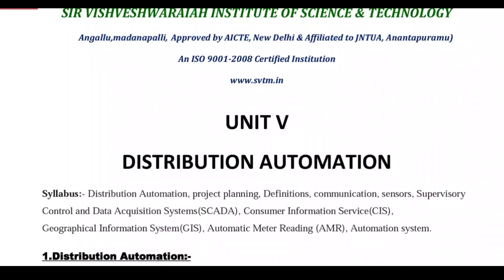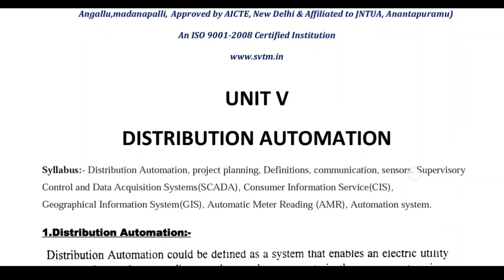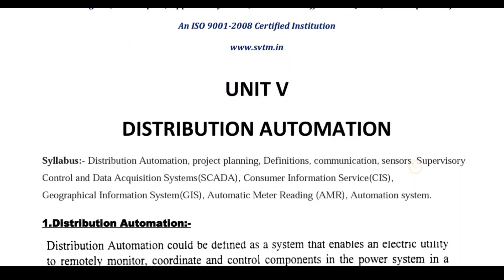Presently, in substations and automatic meter reading, distribution automation is implemented using switches, sensors, processors, and communication networks. Substations are totally equipped with distribution automation for substation monitoring, including remote control units and remote terminals.